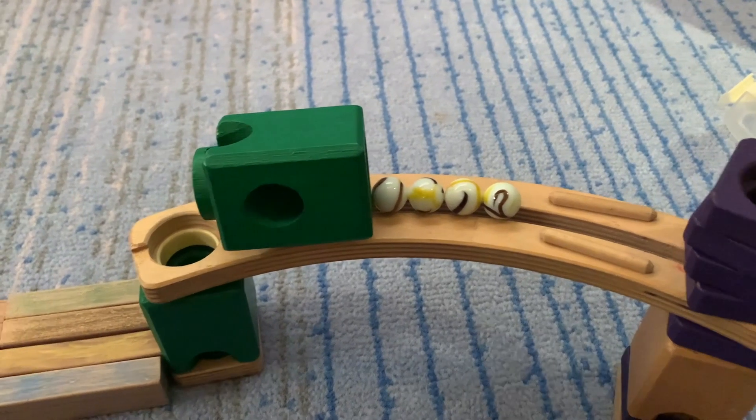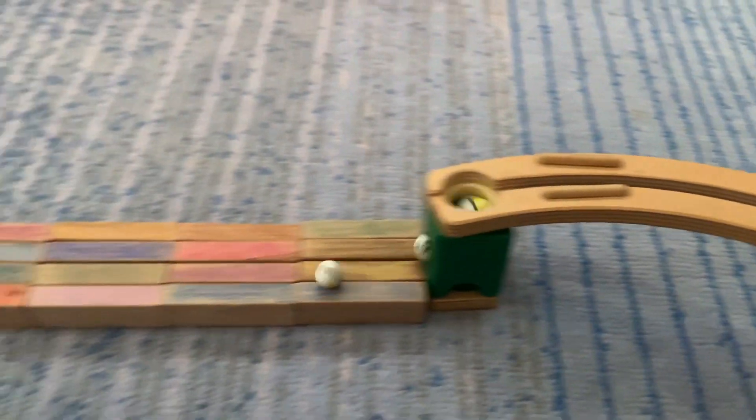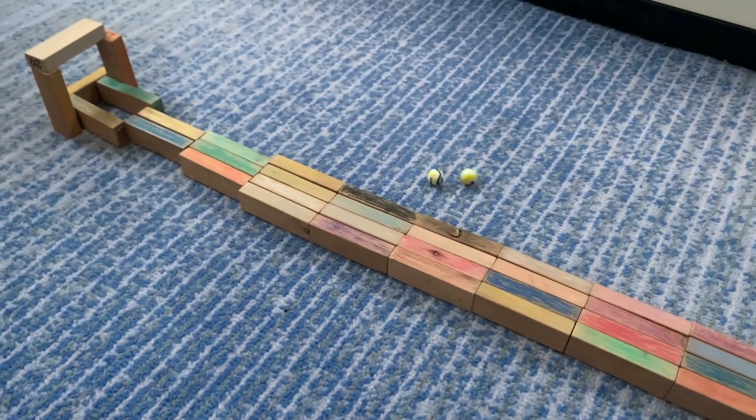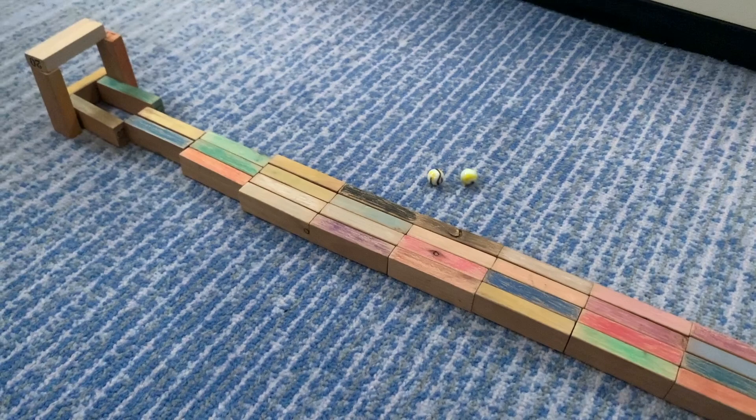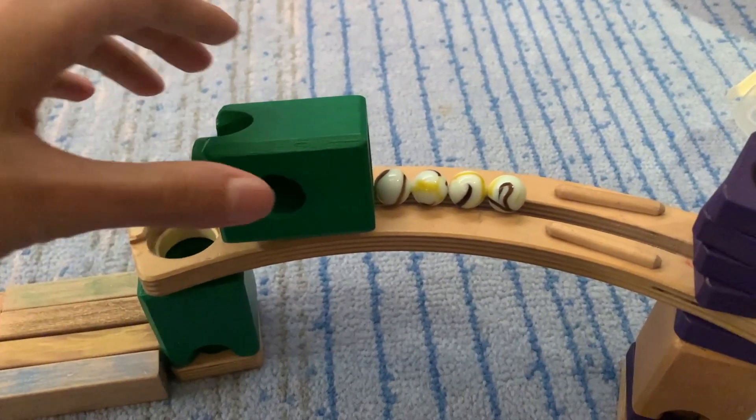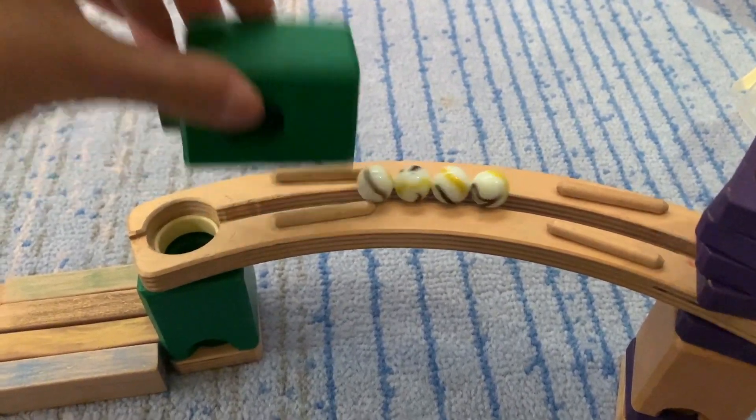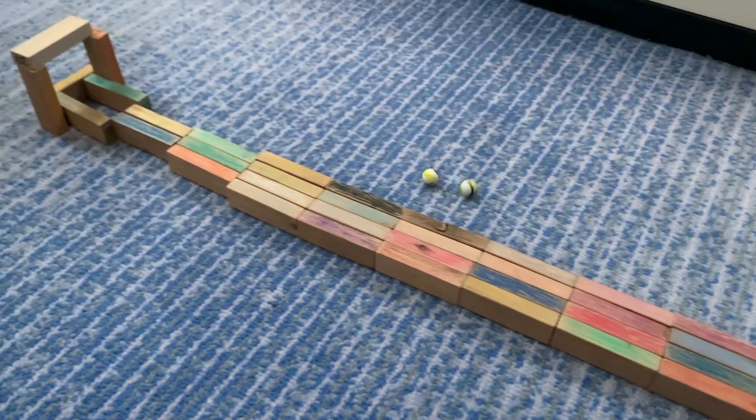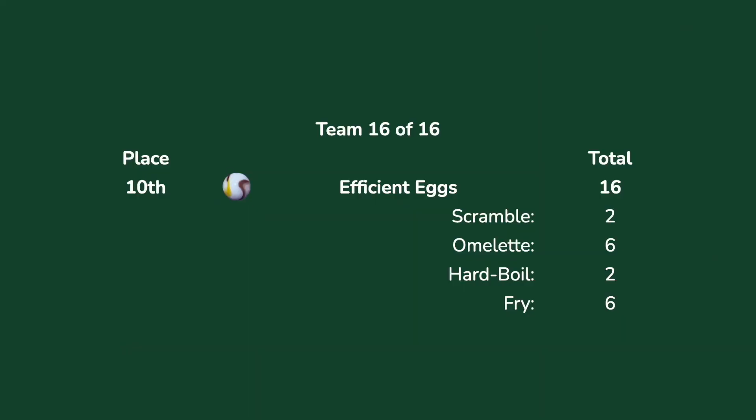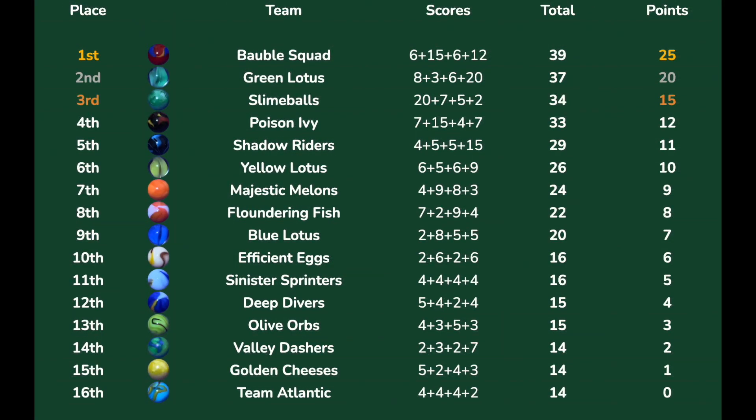But now the Efficient Eggs—they're not great at balancing. Can they do it? No, they will not. They will not challenge for the win, they will not challenge for the podium. So that means that the Bauble Squad will win gold. Efficient Eggs, look at this—two of them coming to the near side and the other two going to the far. It's only good enough for 10th place. So the Efficient Eggs do not challenge Bauble Squad.